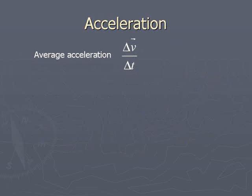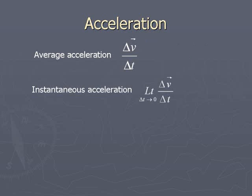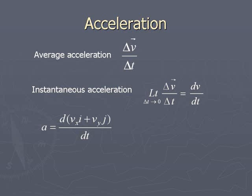Acceleration. Average acceleration is Δv̄/ΔT, where Δv̄ is the change in velocity and ΔT is the time taken for this change. So total change in velocity divided by total time is the definition of average acceleration. If ΔT is made as small as possible, then the limit of Δv̄/ΔT as ΔT tends to 0 gives a constant value represented by dv/dt, which is termed the instantaneous acceleration.